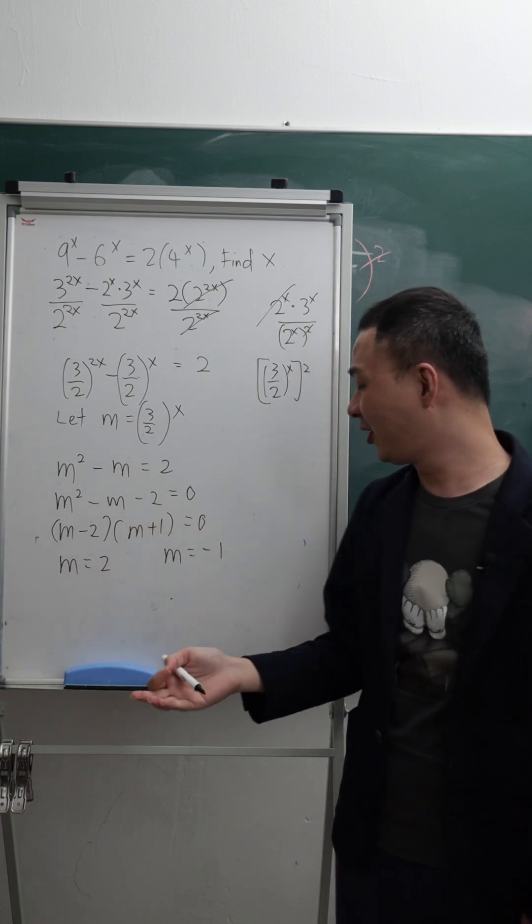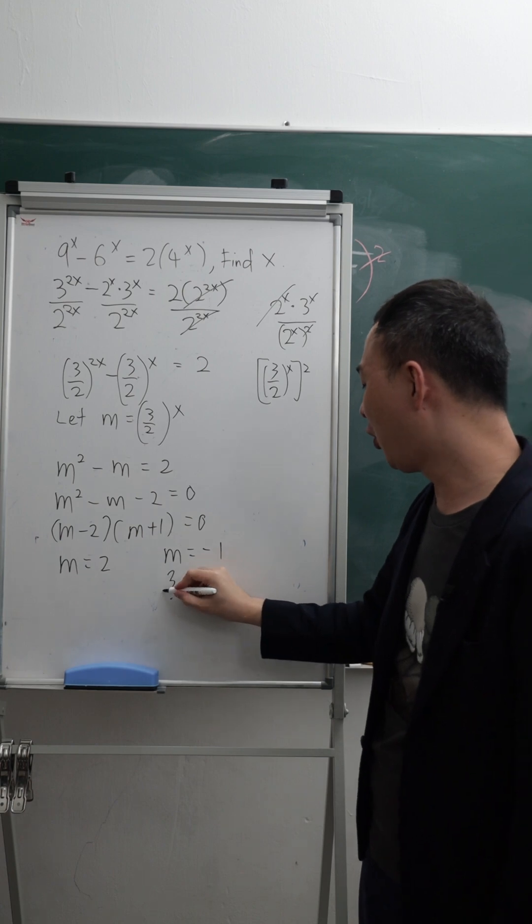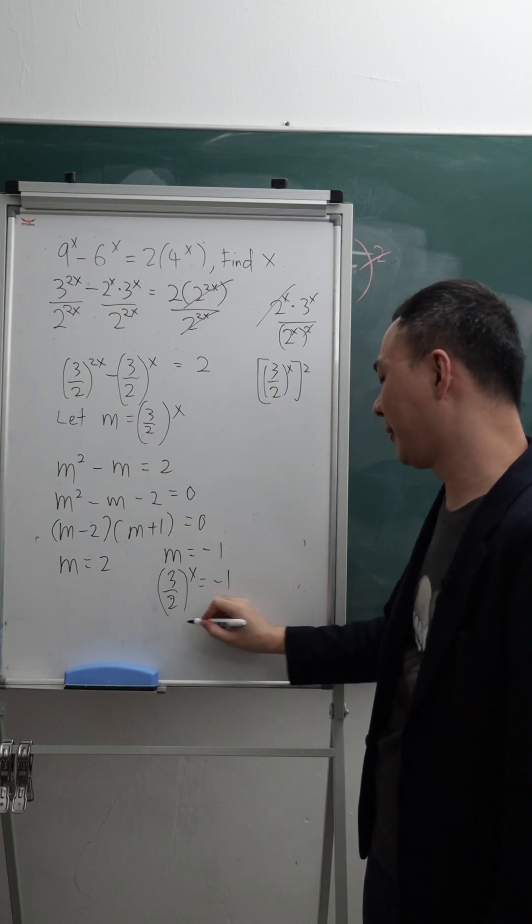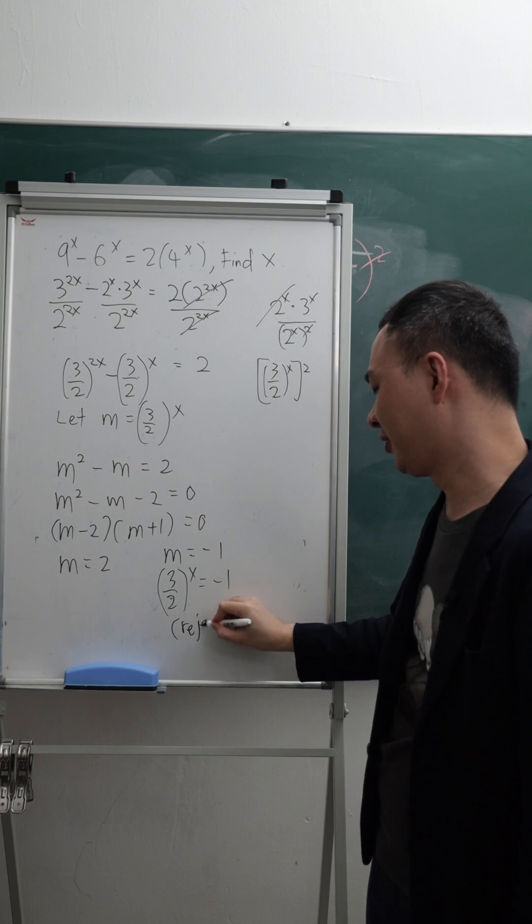This one will be rejected because later when I put 3 over 2 power of x equals to negative 1, this is impossible. So this one will be rejected.